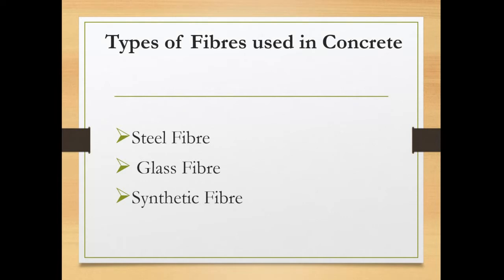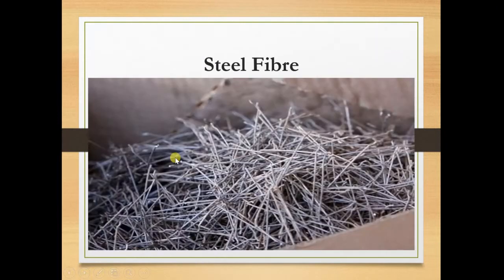Synthetic fibers are basically polymer-type fibers which include polyester, nylon, polypropylene, and polyethylene. Glass fibers are small fiber-like glass particles. So these are the main types of fibers used in concrete.